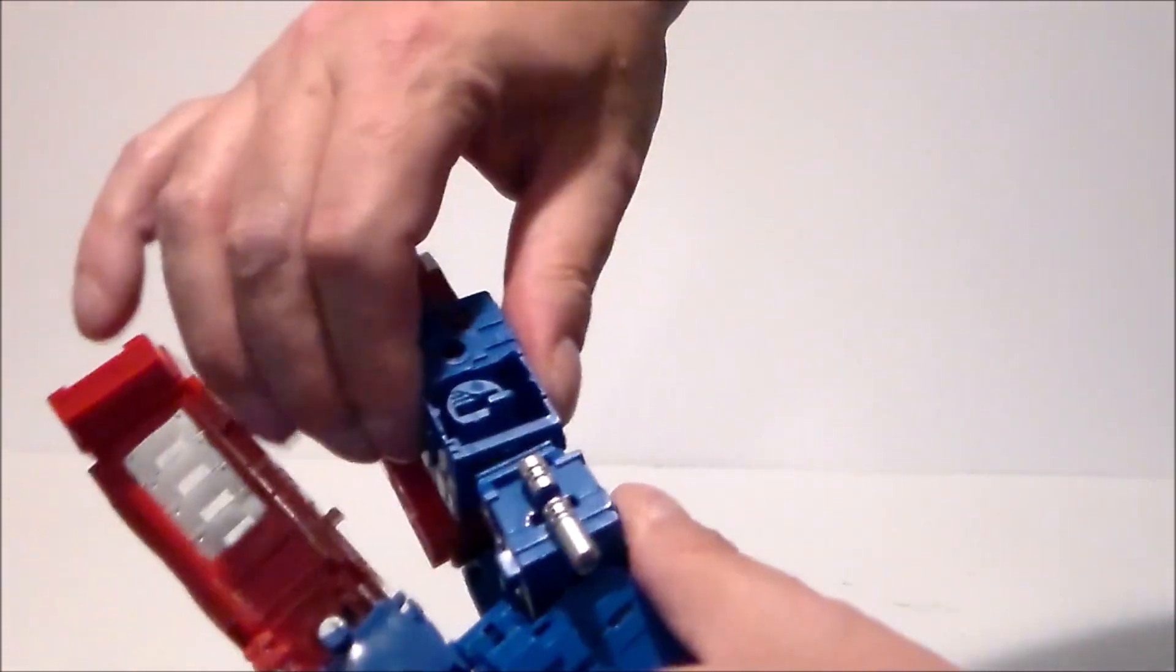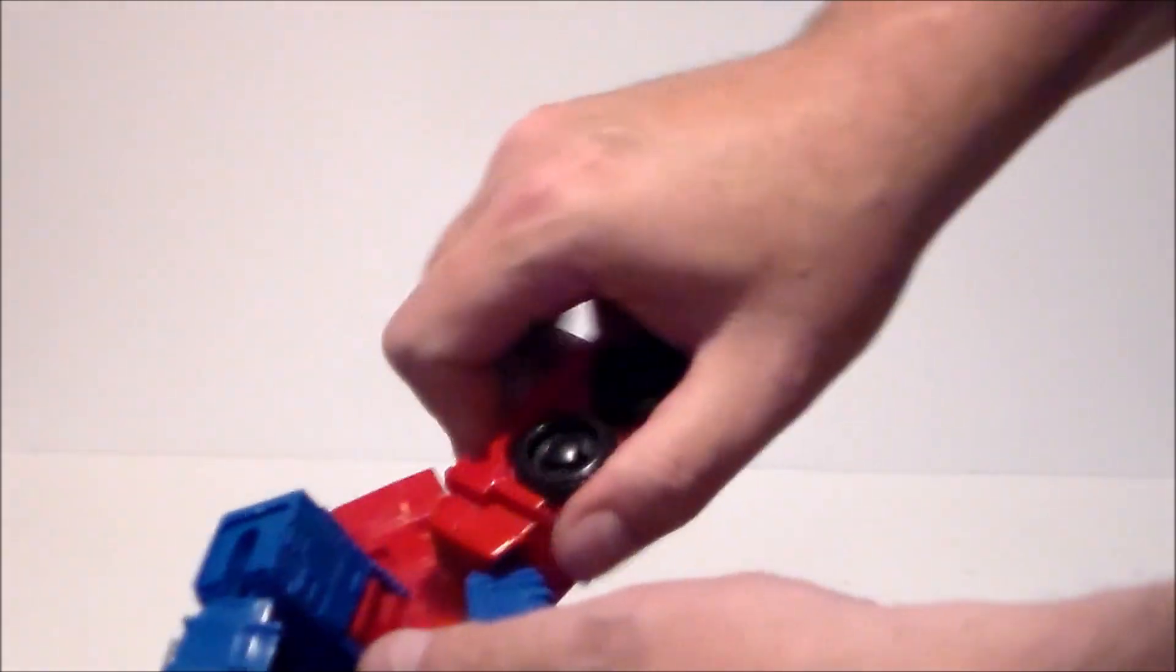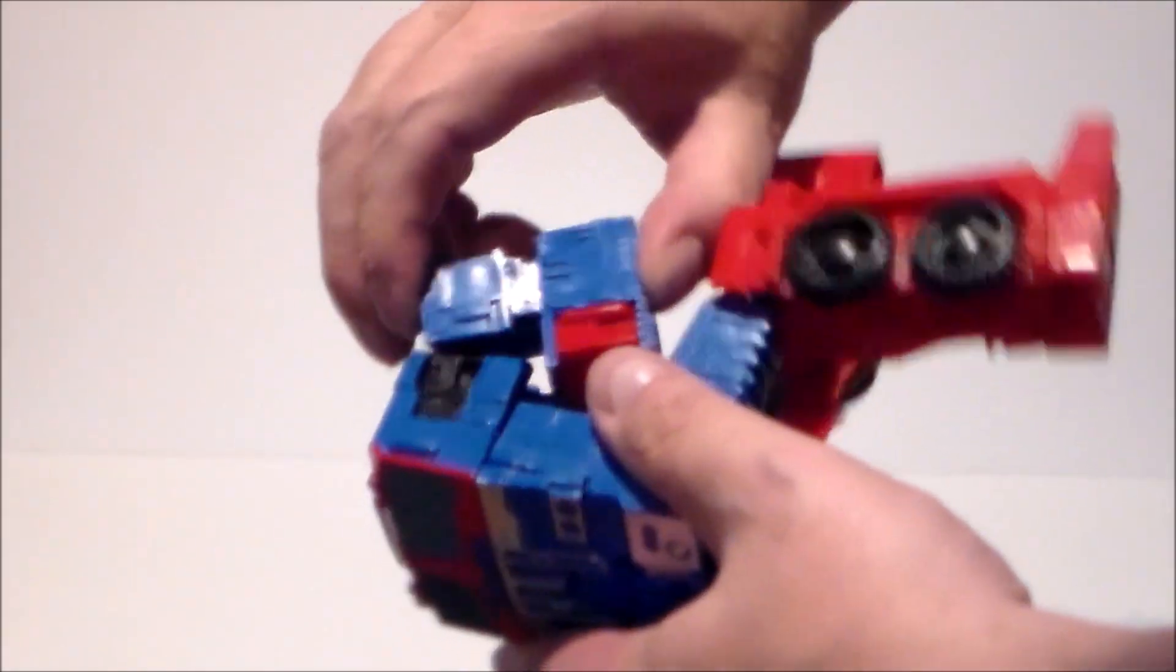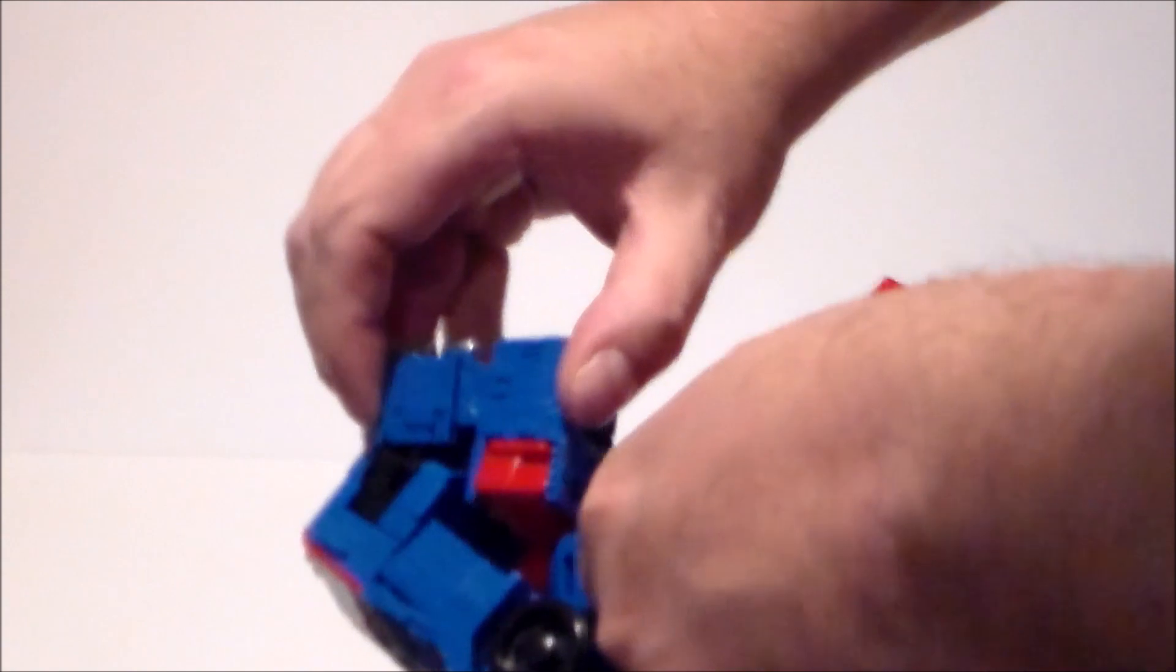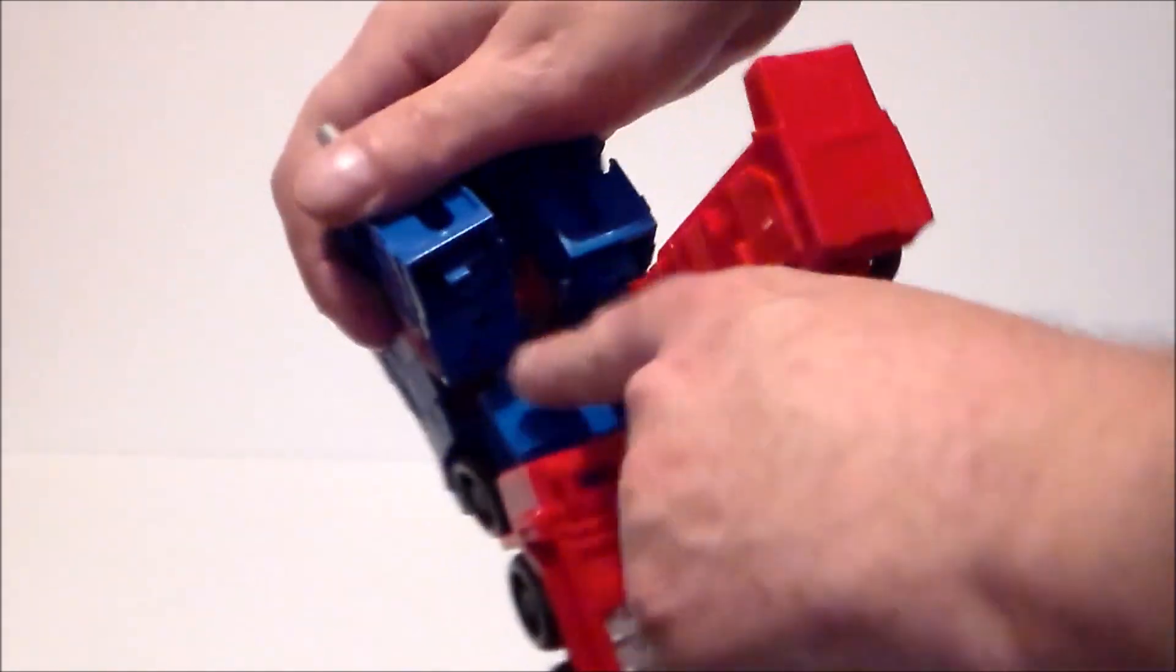And again, you're going to do the same thing with the other arm. You're going to twist this ball socket around and you're going to work it into place so that the red is going to go inward and kind of make the door. So just kind of maneuver that in. You get a little peg hole there and a peg there and clip those into place.